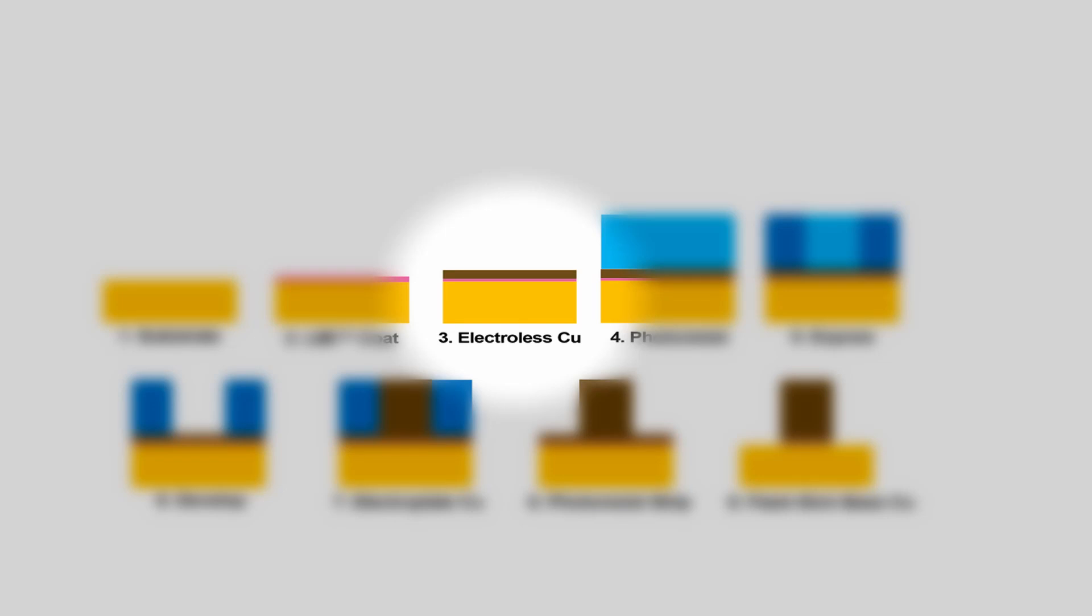Following the electrolysis copper plating step, we follow the very standard photoresist processes. We're going to apply the photoresist, expose and develop. From there we're going to go into electroplating, and again this is the same electrolytic copper chemistry that your PCB fabricators are using today, and this will form the circuit traces.